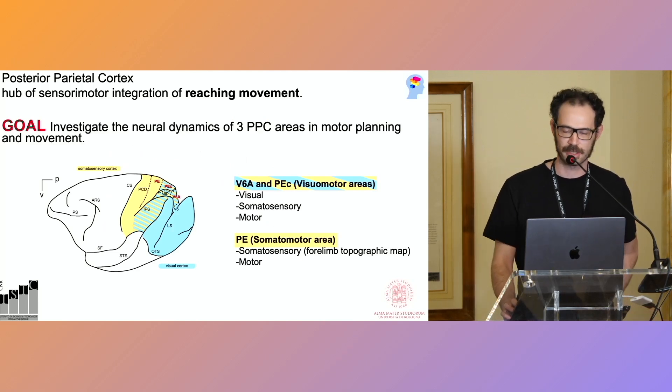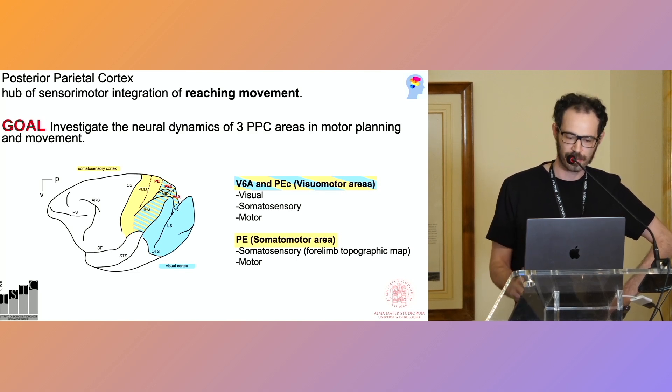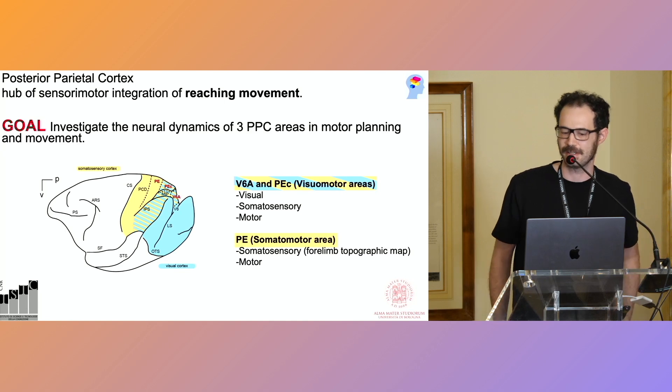So the goal of this analysis that I will show you is to investigate the planning phase and the execution phase in three posterior parietal cortex areas during a reaching task. These three areas are called V6A, PC, and PE.